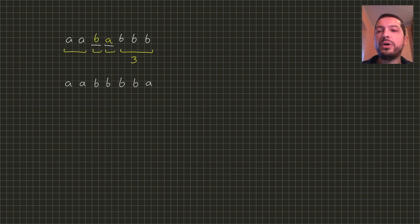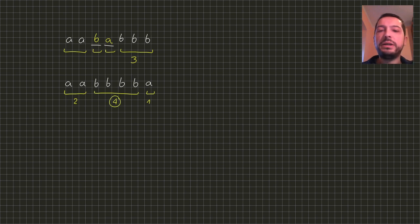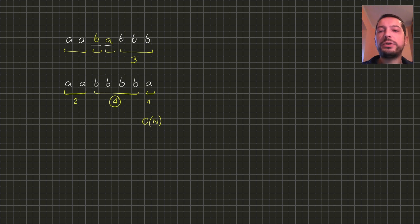When there are no missing letters in the string then we just have to calculate the lengths of the fragments of the same letters and return the biggest length. This can be easily done in linear time by iterating over the string from left to right, increasing the length of the current fragment if the current letter is the same as the previous one, or resetting the length to 0 if the letter is different.